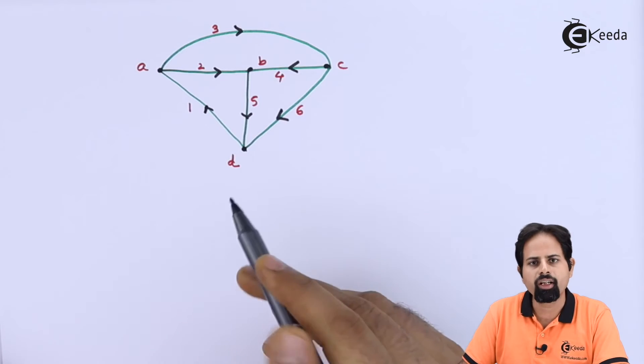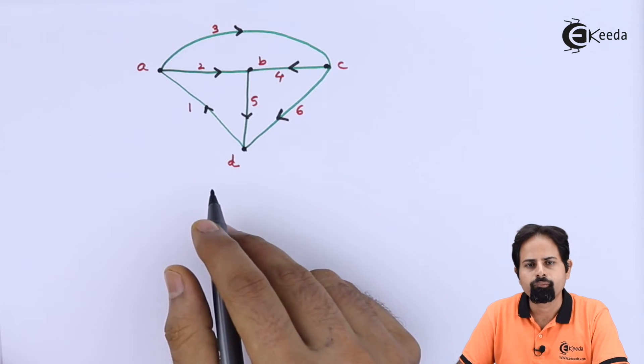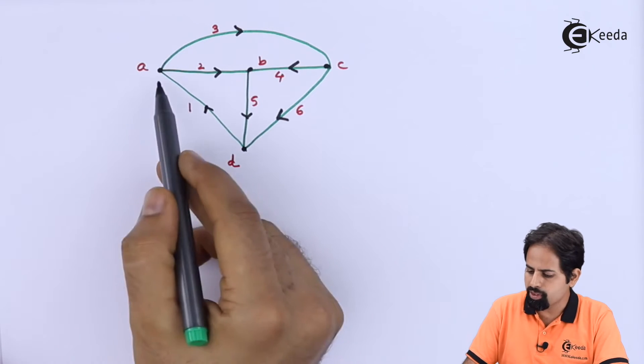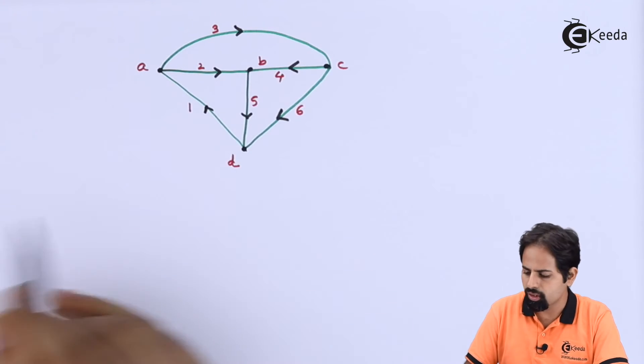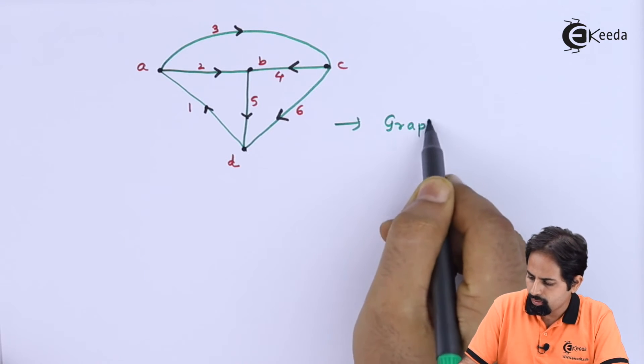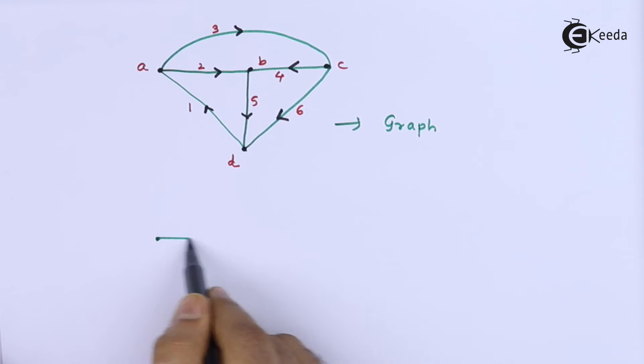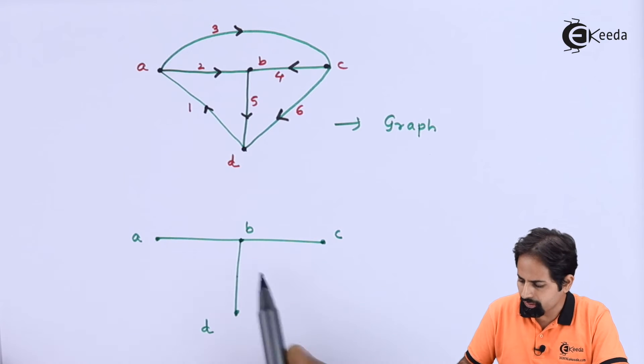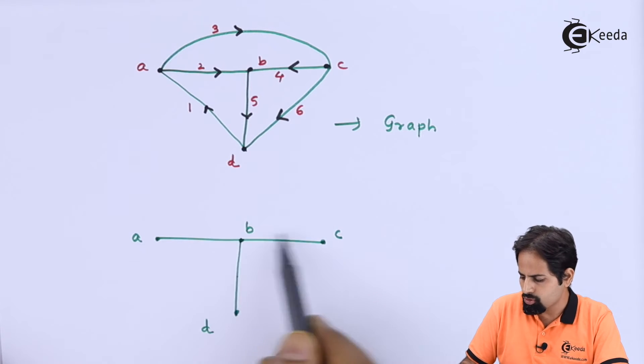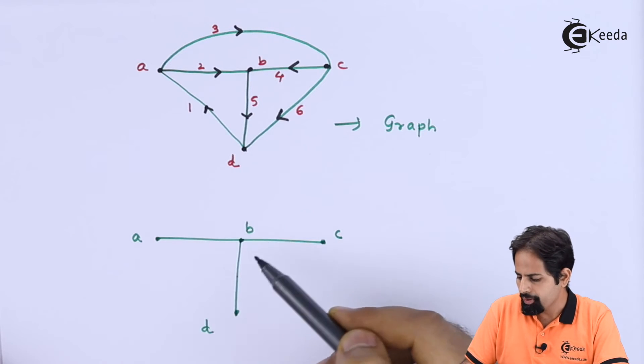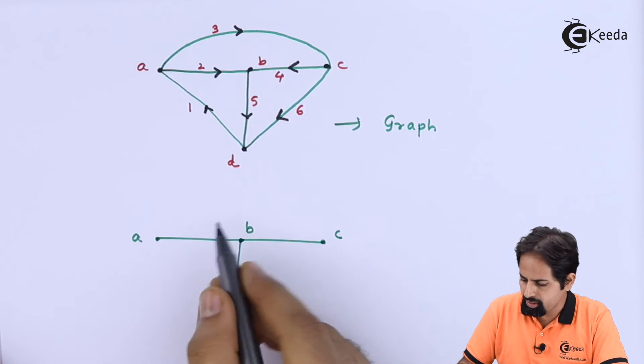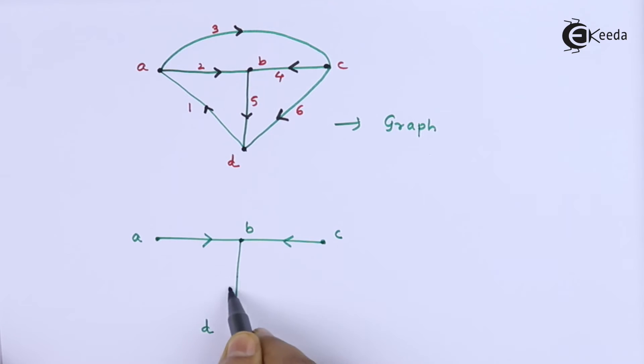So here we are done with the graph. Now next question is to get the tree. Now it's very easy because it is A, B, C, D only four nodes. This is our graph. So the tree will be simply A, B, C and D. So tree has a rule. To draw the tree, you must get all the nodes into account. So they should be present, but not all branches and no loop should be formed. So this is our tree.